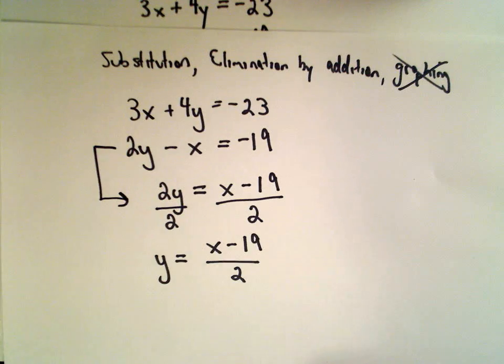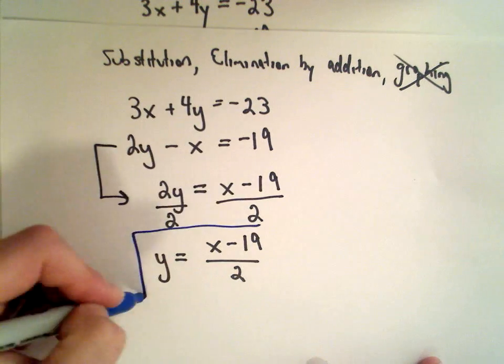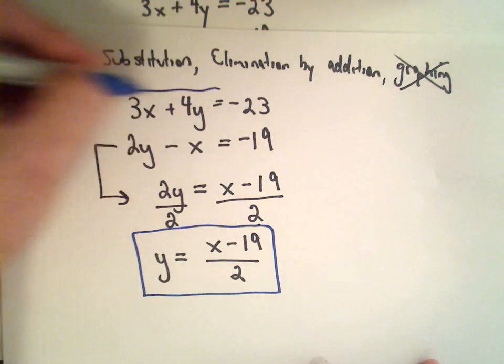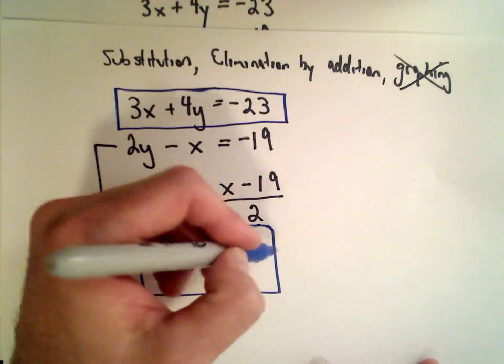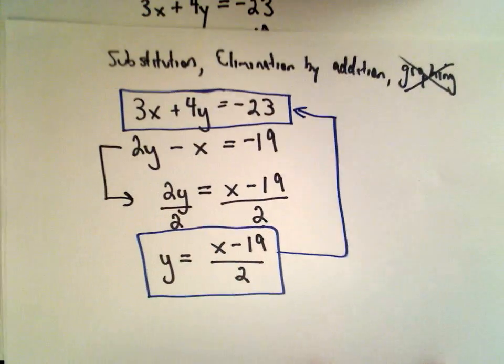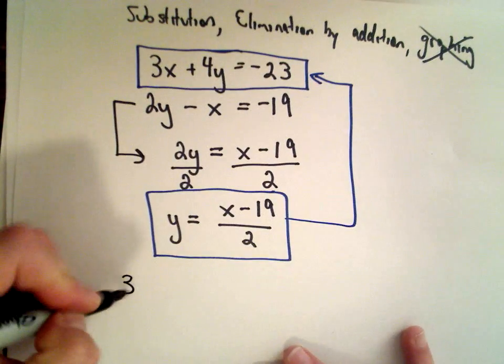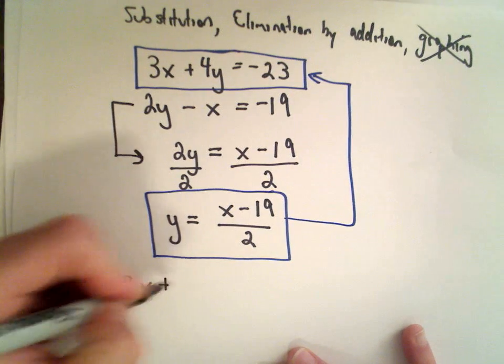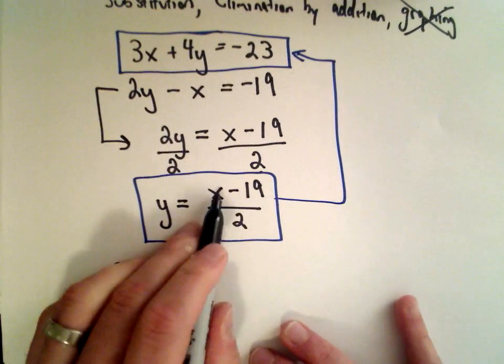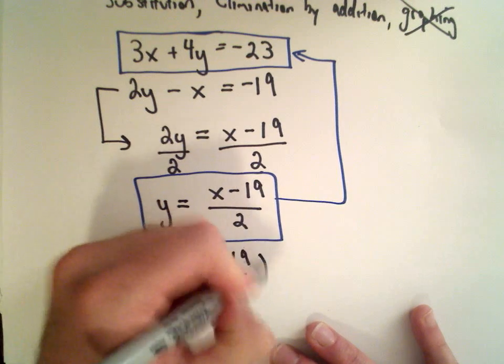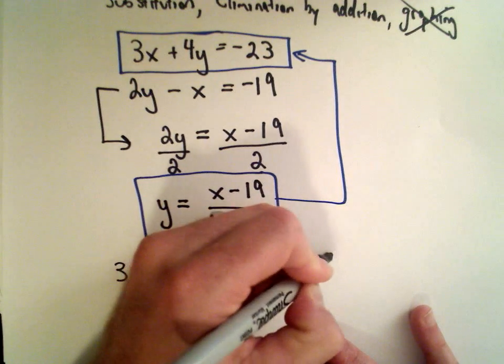Now I'm going to take this equation for y and plug it into the first equation that we started with. So I would have 3 multiplied by x plus 4 multiplied by y—which is x minus 19 over 2—equals negative 23.